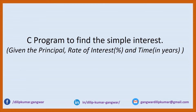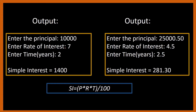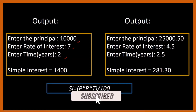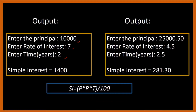In this video we will discuss how to write a C program to find the simple interest. We are given principal, rate of interest, and time. The output should prompt us for those three things and then give us the required answer — that is the simple interest.